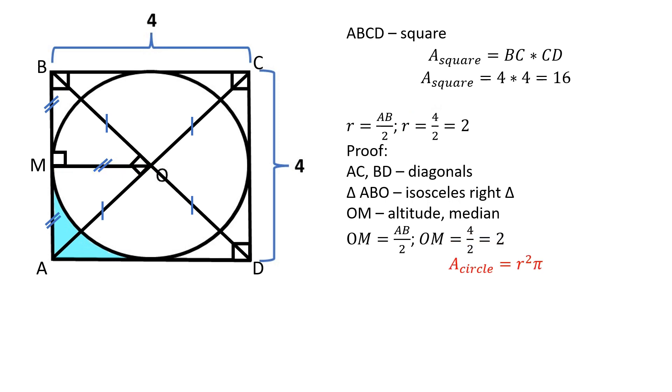The area of a circle is equal to radius squared times pi, which is 4 times pi square units.